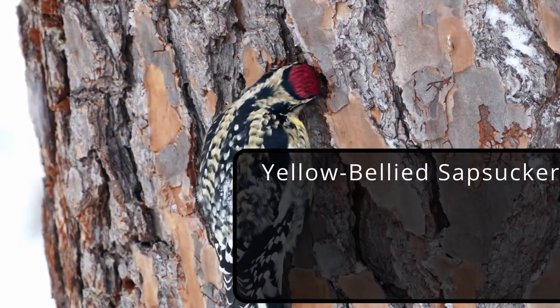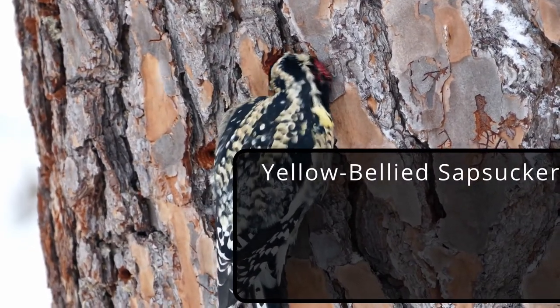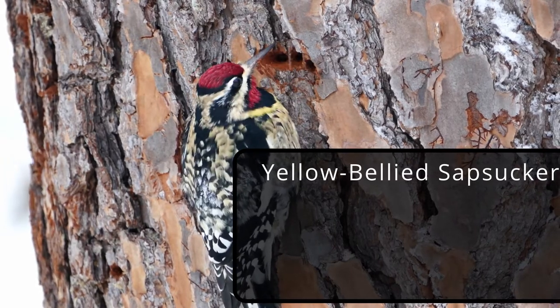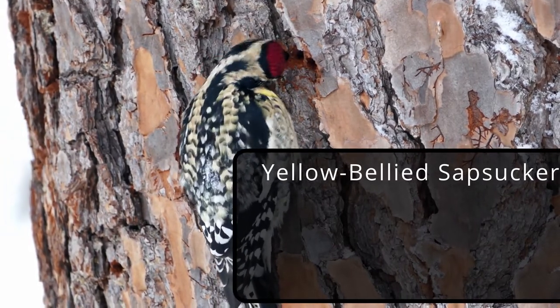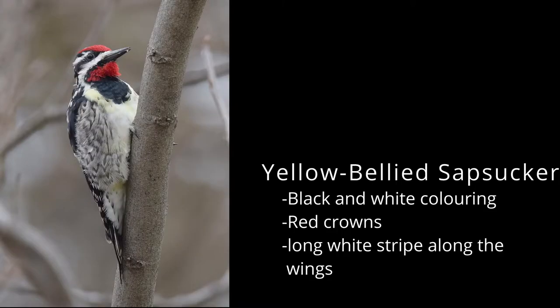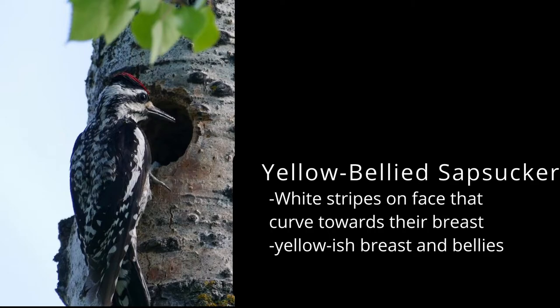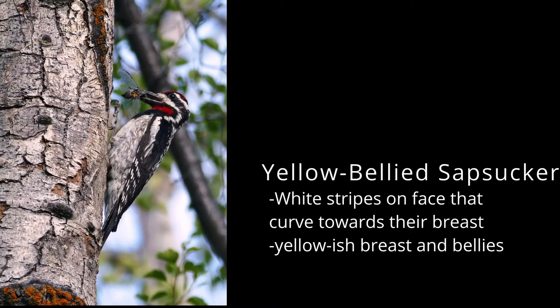Yellow-bellied sapsucker. Not only does their name sound like an epic Shakespearean insult, but they're also bold looking birds. They are black and white with bright red foreheads and a long white stripe along the wings. They have bold black and white stripes on their face which curve toward their chest, and have white or yellowish bellies. The males also have red throats.